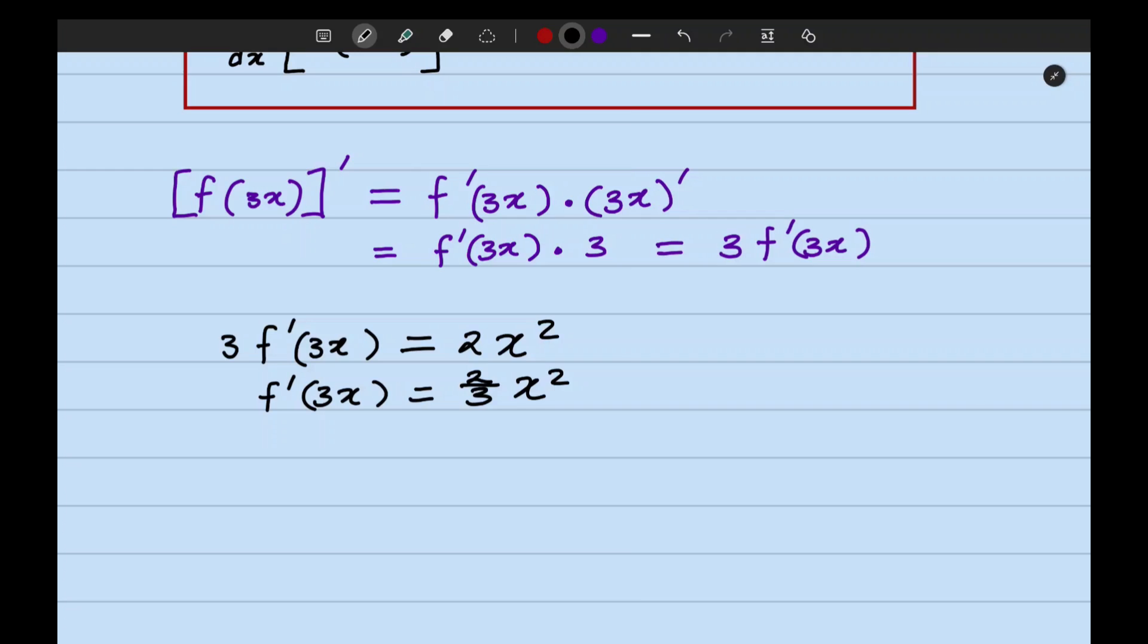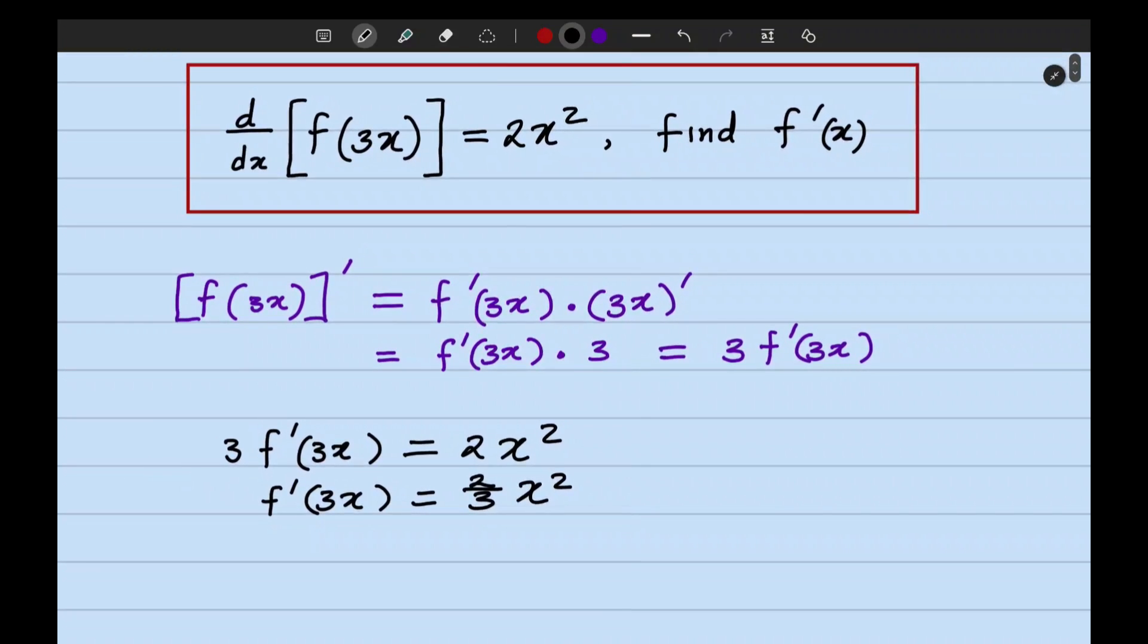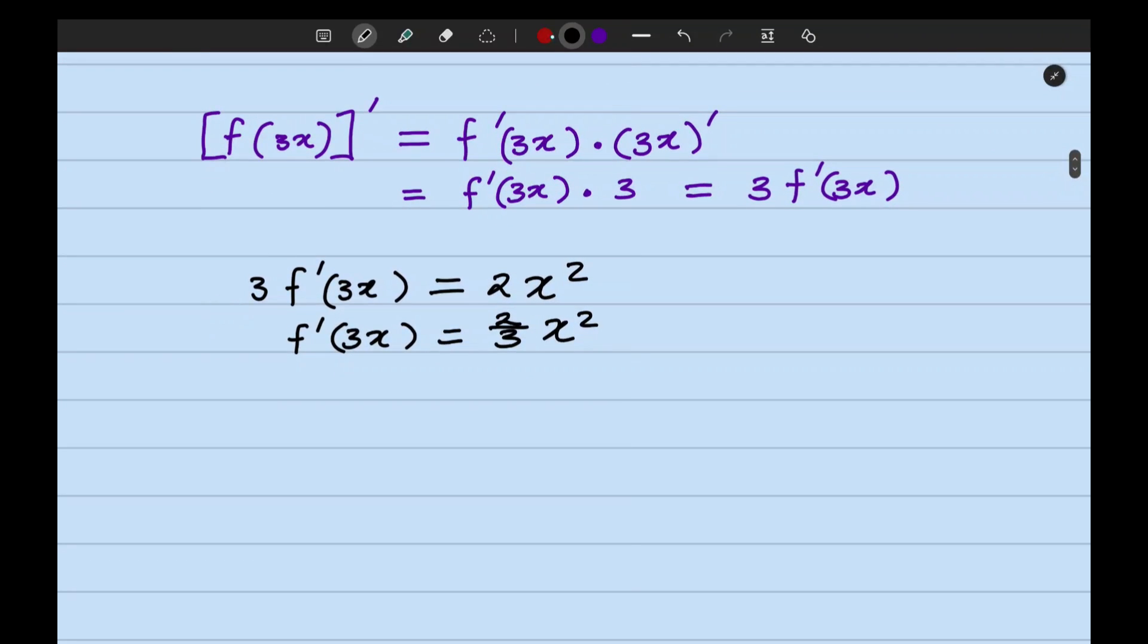This is f prime of 3x. The mission is to get f prime of x. So we don't want 3x as the argument, we want x. What we're going to do is a substitution. Let u be equal to 3x, which means that x is equal to u over 3.